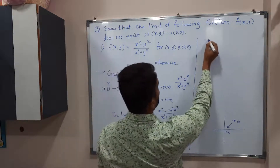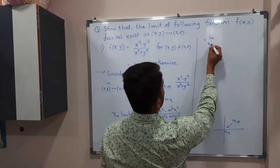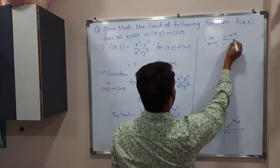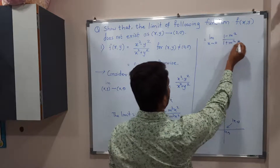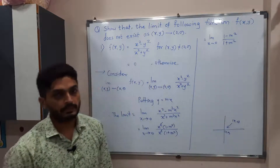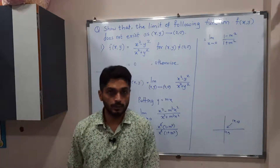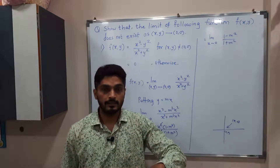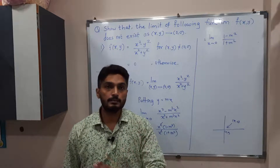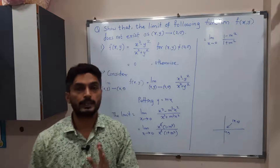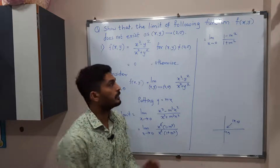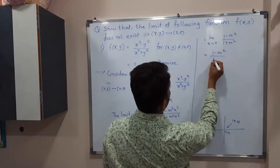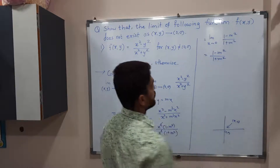This is equal to the limit as x tends to 0 of (1 - m²) / (1 + m²). Now applying the limit means putting x = 0, but there is no x in the expression — it is independent of x. So the result is simply (1 - m²) / (1 + m²).